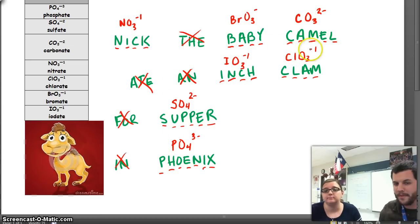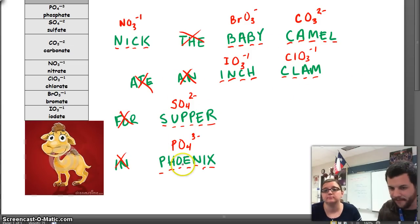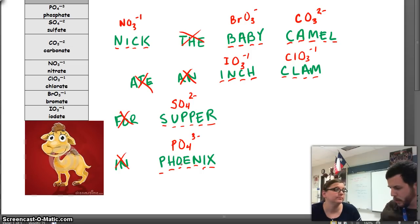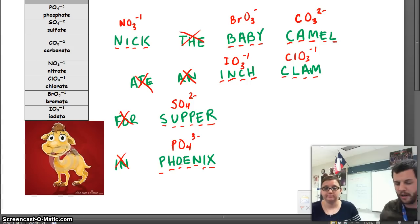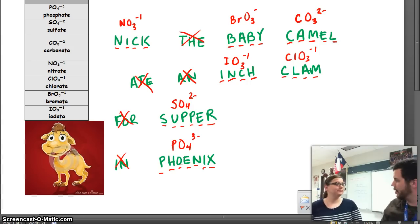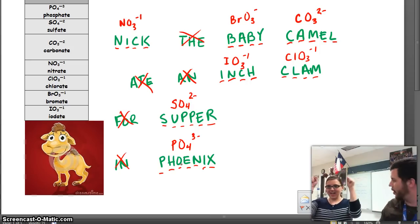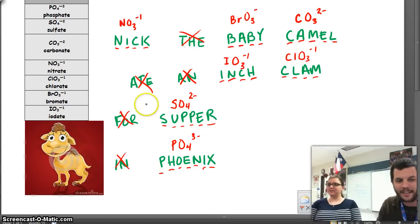So: Nick the baby camel ate an inch clam for supper in Phoenix. All of the consonants give you the number of oxygens, and all the vowels give you the charge. I think we can do this! Thank you for your help. You're welcome. Bye guys. Bye.